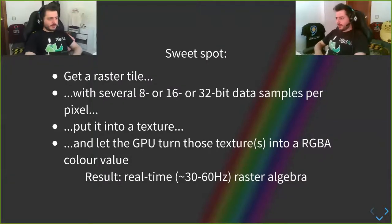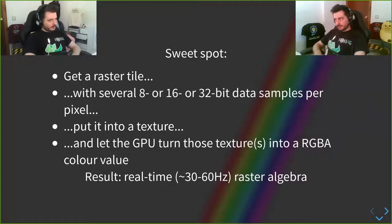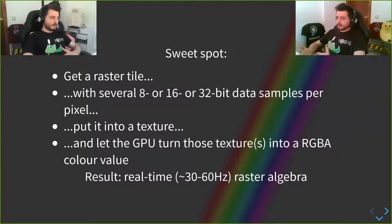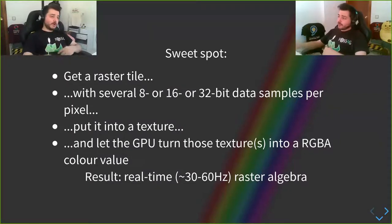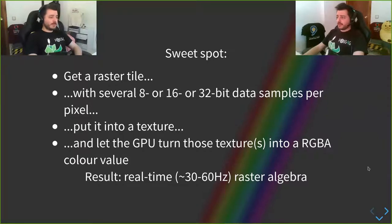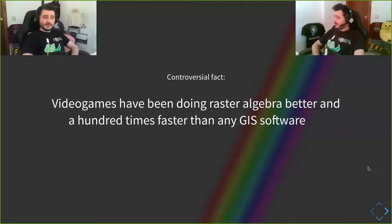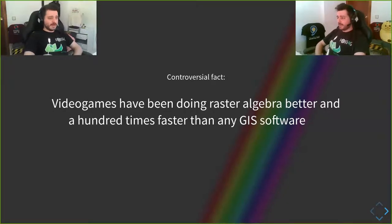Here is what I am convinced can be done and should be done: you can take a raster tile with 8-bit colour, or 16-bit, or 32-bit per pixel per sample — and remembering that we have several bands on every image — you can put that directly into a WebGL or OpenGL texture with no transformation whatsoever. Just dump data into video memory and let the GPU convert all those textures into a visible RGBA colour. You can do real-time raster algebra. Video games have been doing raster algebra better and 100 times faster than any GIS software for years.